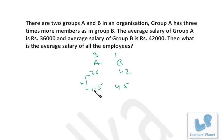Either add 36 and 1.5 or deduct 4.5 from 42. In both cases, we'll get the same answer. The average is 37.5K, that is Rs. 37,500.